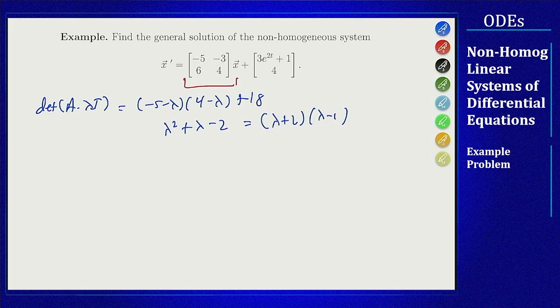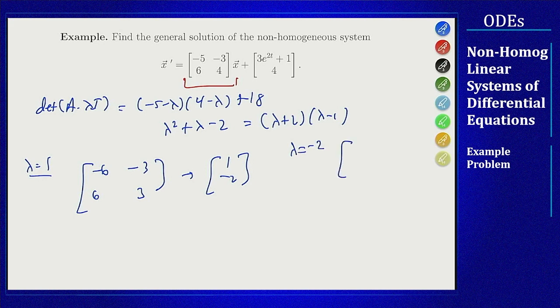For eigenvalue 1, the matrix becomes minus 6 minus 3, 6, 3, which means we have eigenvector 1 minus 2. For lambda equals minus 2, when I add 2 along the diagonal I get minus 3 minus 3, 6, 6, so 1 minus 1 is a possible eigenvector here.